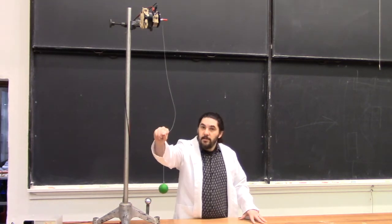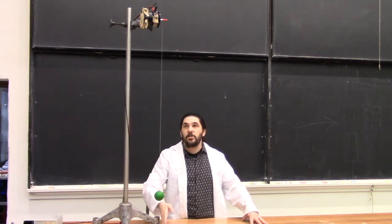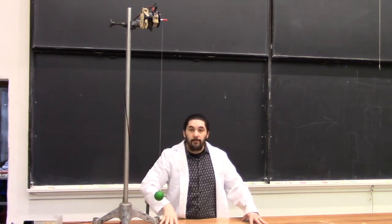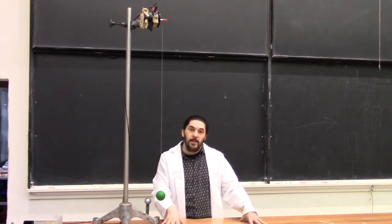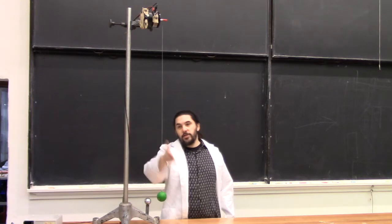This being a string, the only forces on this bob here are gravity and tension in the direction of the string. So we can force it to oscillate by moving that pivot point back and forth, thus changing the direction that the string is facing.